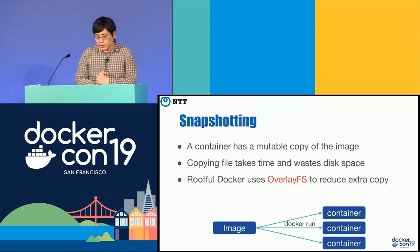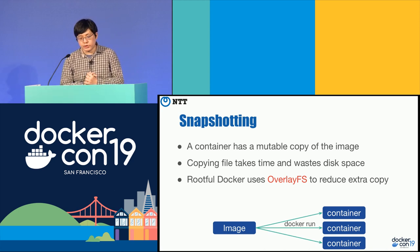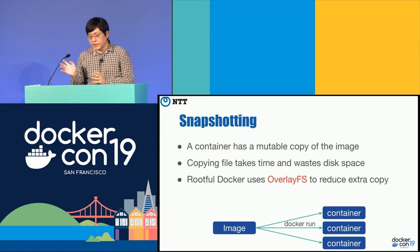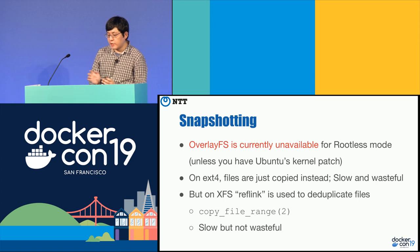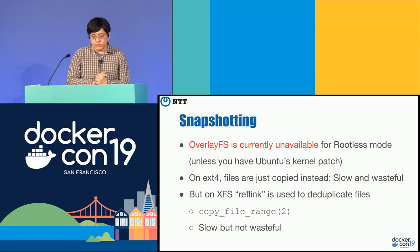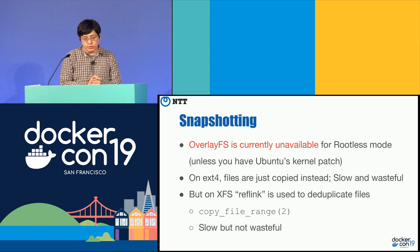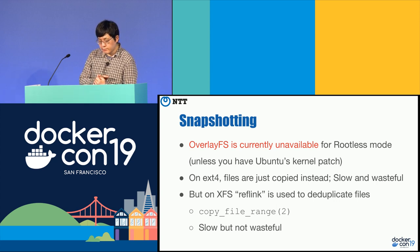The next topic is snapshotting. When you do docker run, Docker daemon makes a copy of the image. But copying files takes time and disk space. In root-full mode, Docker uses overlay filesystem to reduce extra copies. Currently overlay filesystem is not available for rootless Docker unless you're using the Ubuntu kernel. If you're using ext4, files are just copied without overlay fs — it's slow and wastes disk space. But if you're using XFS instead of ext4, reflink is used to deduplicate files, similar to overlay fs, and you can save disk space.